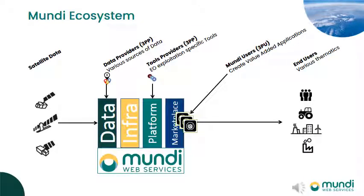This slide identifies the different roles in the Mundi ecosystem. Open satellite data are automatically ingested in Mundi, differently processed to be ready to use for Mundi customers. Two kinds of third-party providers — data providers or tool providers — can also supply Mundi to distribute their products through the Mundi marketplace. Mundi users are able to customize Mundi as a cloud platform, requesting different data and tools according to their needs. At the end of the value chain, the end user or final client can access value-added applications through the Mundi marketplace and/or via the third-party provider front office.